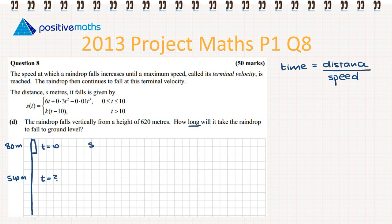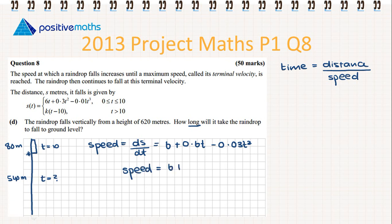From the previous question we know that speed = ds/dt = 6 + 0.6t − 0.03t². We want to find the speed when t = 10, so we substitute 10 for t: speed = 6 + 0.6(10) − 0.03(10²). When we simplify we find the speed is 9 meters per second.